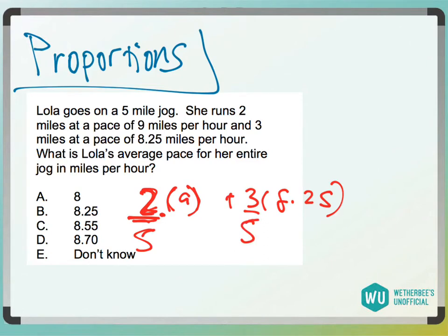So one thing you could do, if you didn't even know how to set this up—she's going 2 miles at 9 miles per hour, 3 miles at 8.25 miles per hour. There's no way her pace is going to be 8 or 8.25, because it's going to have to be between 8.25 and 9.